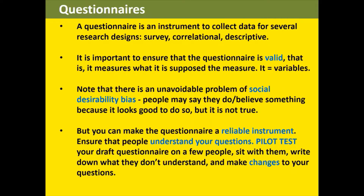Two important concepts: instruments must be valid and reliable. Validity means the questionnaire studies what it is supposed to study — if your study is about A, the questionnaire must measure A, not B. Reliability is about wording so that it is understood in the same way by different people. The wording must be simple and items cannot be double-barrelled — you cannot ask 'how do you feel about A and B' because the responses will be mixed up. These rules ensure that every time people respond, they will respond in about the same way.